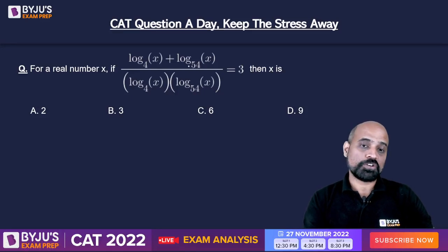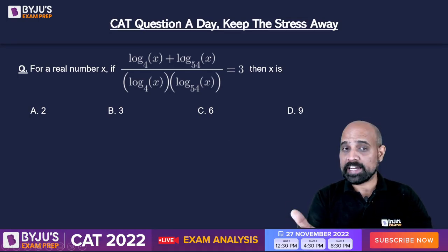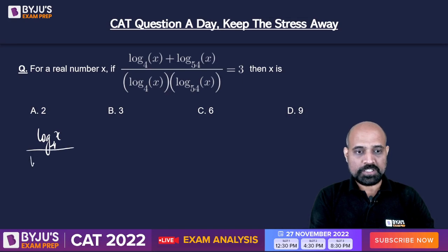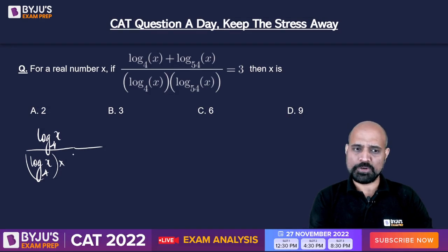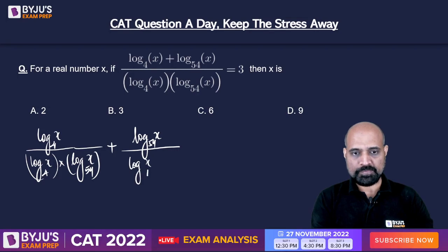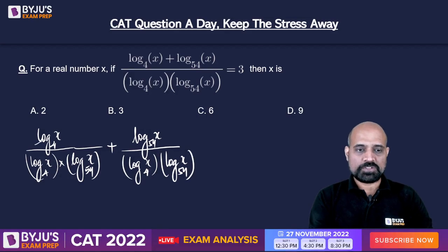If you know the basic properties of log, you will realize that we cannot do anything about the numerator because the bases are different — 4 and 54 — so we can't bring the logs together. What I'm going to do is break down this sum in the numerator as a sum of fractions: A plus B upon AB. So the first fraction will look like this and the second fraction will look like this. Since these two are the same, they will cancel out.